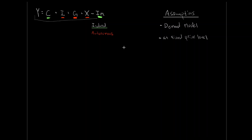We've separated our expenditure approach to GDP into induced and autonomous components. Let's talk about the induced components in particular, starting off with consumption. Consumption is going to be influenced by our level of GDP — the math way to say this is that consumption is a function of income, a function of GDP. This C isn't going to be just consumption; it's going to be what we call our consumption function. What's going to influence this consumption function?